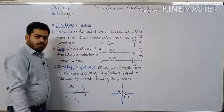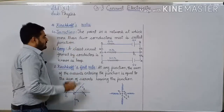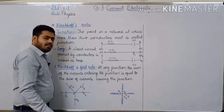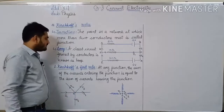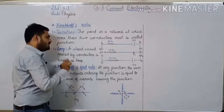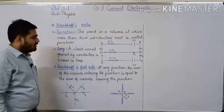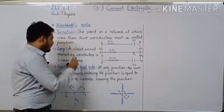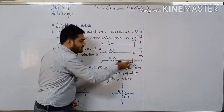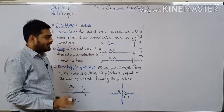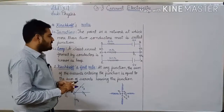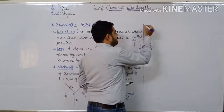If the junction concept is clear, you will easily understand the first rule. Now, loop: a closed circuit formed by conductors is known as a loop. A closed circuit formed by conductors — so there is a closed circuit, and that is a loop. There will be a lot of loops. For example, we will discuss the first rule.